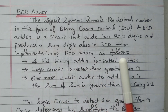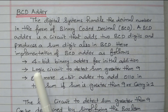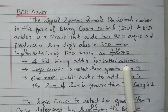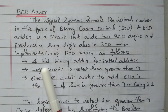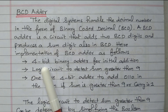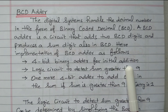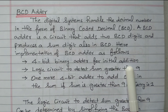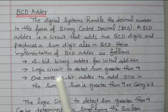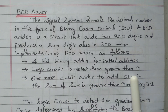While implementing BCD adder, we need to follow the following. First, a four-bit binary adder for initial addition. We need a four-bit binary adder. Similarly, an eight-bit binary adder is also available, but a four-bit binary adder is the basic adder. First, we need to initialize the four-bit binary adder. Then, a logic circuit to detect the sum greater than nine.